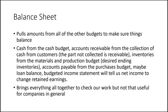Accounts payable is what you've bought but not yet paid for per the purchases budget. A loan balance decreases as you make payments — the cash paid goes on the cash budget, and the remaining balance shows on the balance sheet each period. The budgeted income statement gives us net income for retained earnings, just as in regular accounting. The balance sheet is mainly a check; we don't spend much time analyzing it relative to the revenue and expense items in the plan.